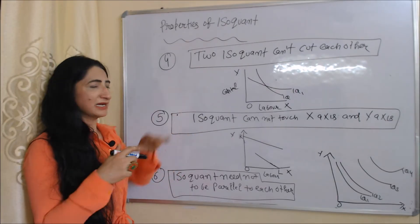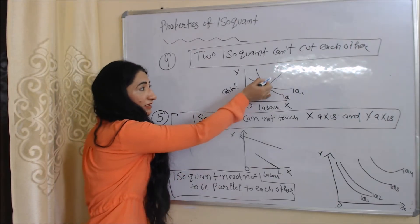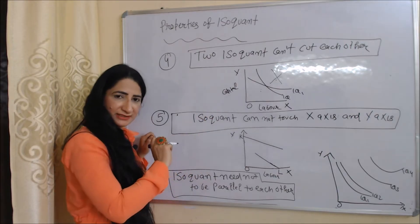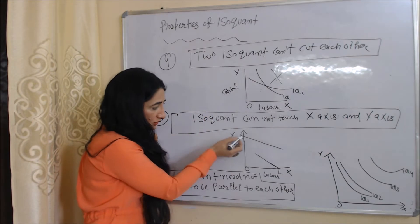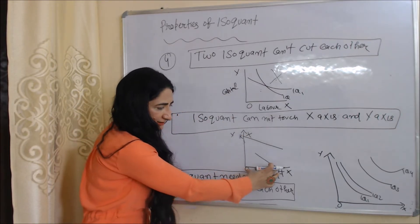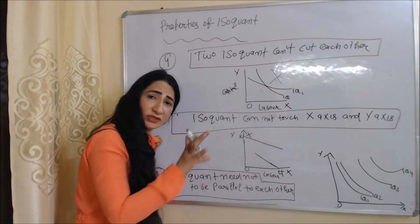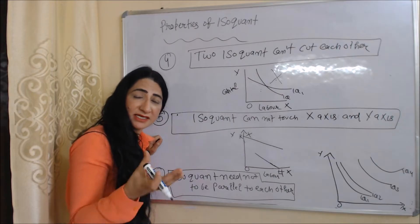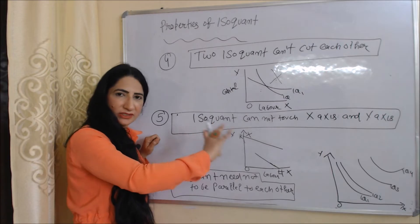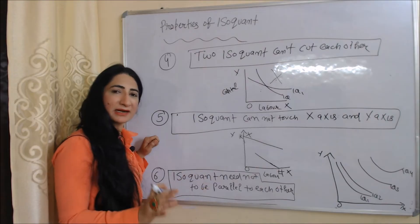The next property is that two isoquants cannot cut each other. Next, isoquants cannot touch the x-axis or y-axis. If an isoquant touched the x-axis, that would mean we are using only labor without using capital, which is not possible. So we say isoquants cannot touch either axis.